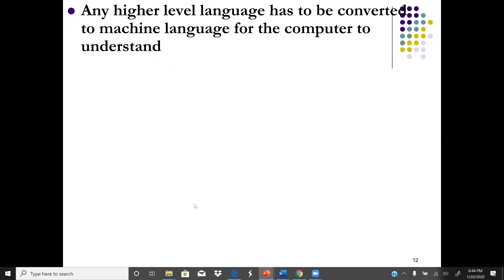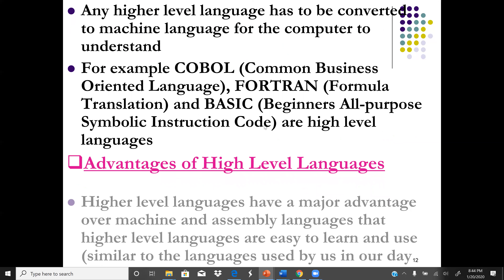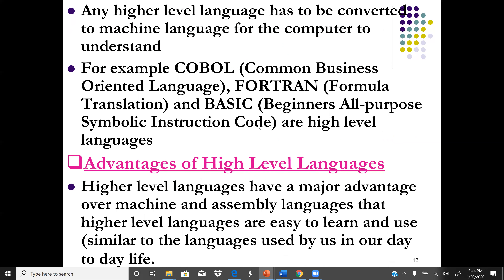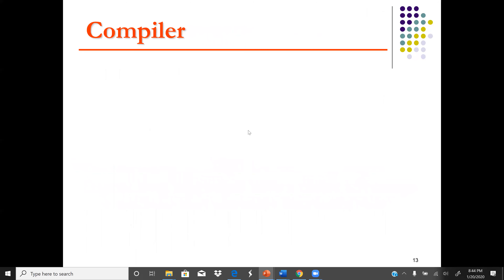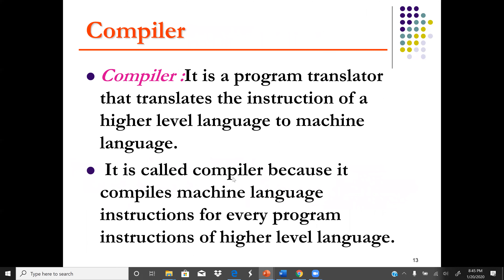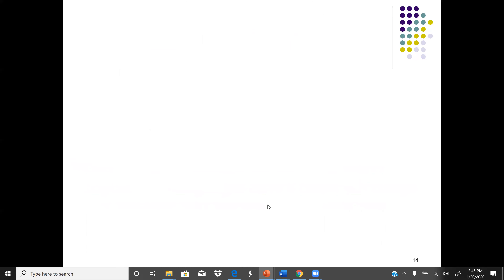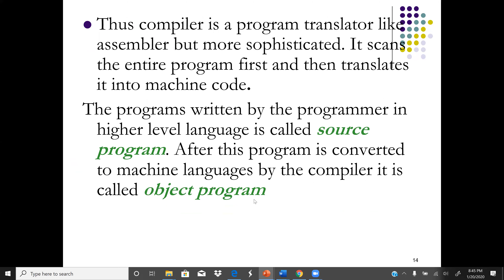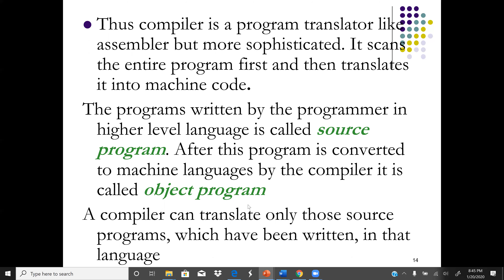The source code is the program written in a higher level language. We compile it to machine language for the computer to understand it. The advantage is that it is very easy to learn, especially for humans, since it is in the form of English. A compiler is a program that translates high level language to machine language — it compiles machine language instructions for every instruction of the higher level language. A program written by a programmer in higher level language is called a source code or source program; after compilation it is called an object program. A compiler can translate only those source programs written in its specific language.